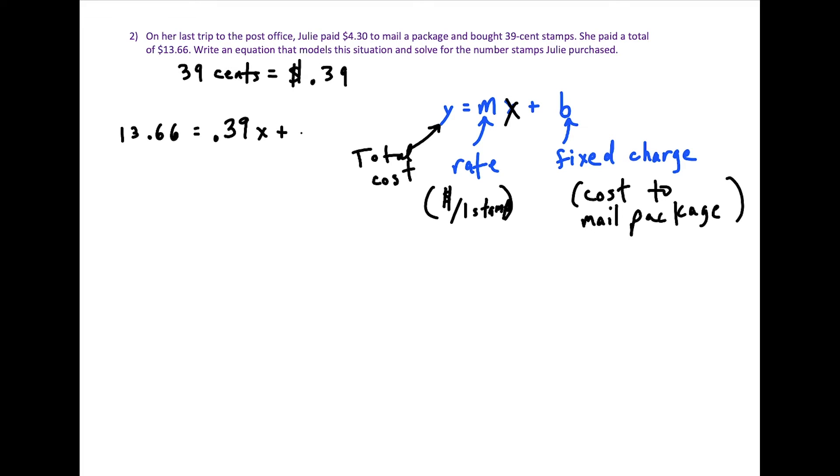So we have 0.39 times x where x represents the number of stamps that she's buying, plus the fixed charge. She paid $4.30 to mail out the package. So now all we have to do is solve for x where x represents the number of stamps.